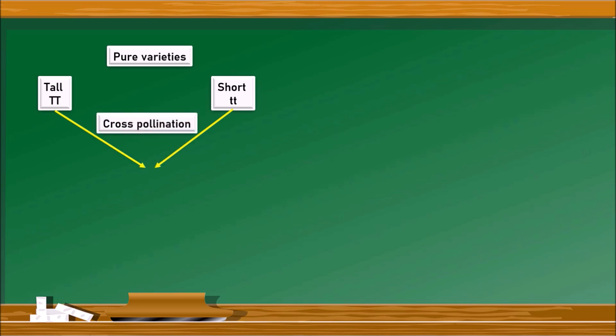When we cross-pollinate both tall and short pure varieties, it results in the F1 generation with all tall plants, with factors capital T and small t. The gametes formed from tall plants are capital T and from short plants are small t. Since tall is the dominating factor, all the plants in F1 generation look tall.